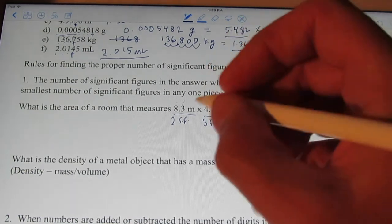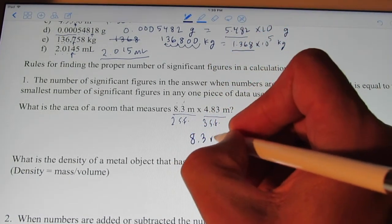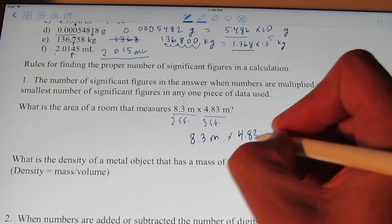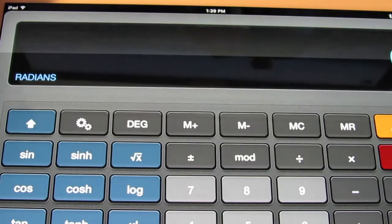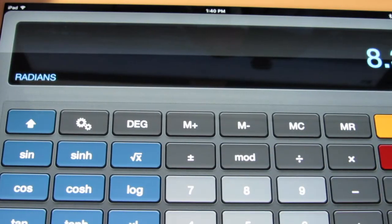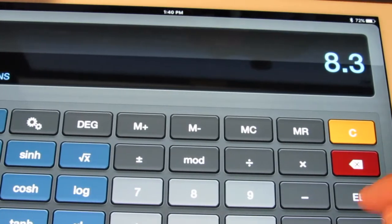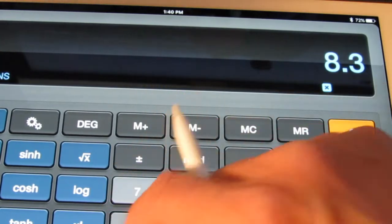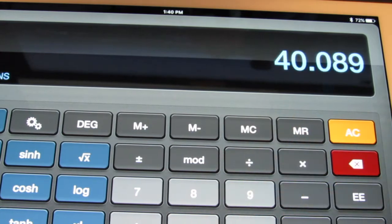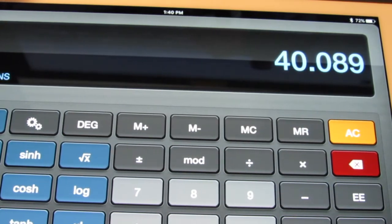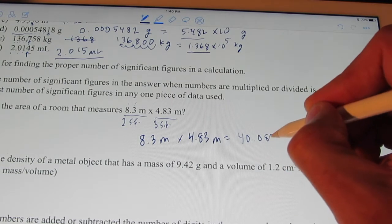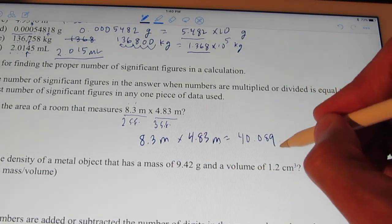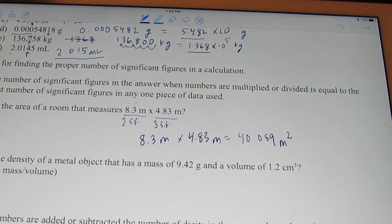Now, when I multiply these two together, so let's do that. 8.3 meters times 4.83 meters. Let's see what we end up getting here. Let's pull out my scientific calculator quickly. We have 8.3 times 4.83 meters. Times 4.83. And my calculator says 40.089. 40.089. So let's go ahead and write that down. 40.089. And my unit would be meters times meters, which of course is square meters or meters squared.